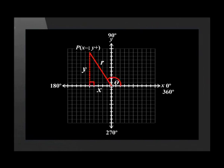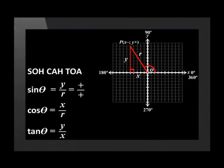Let's see what happens to the trigonometric ratios when we move point P to the second quadrant. X is negative and Y is positive in quadrant 2. Remember that R is always positive. The triangle is drawn down to the x-axis and theta falls between R and 0 degrees. Sine theta equals Y over R. The opposite side Y is positive and the hypotenuse R is positive. A positive value divided by a positive value equals a positive value. Therefore, the sine of any angle in quadrant 2 will be positive.